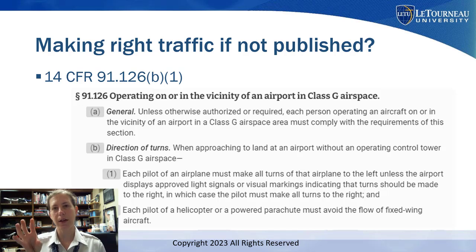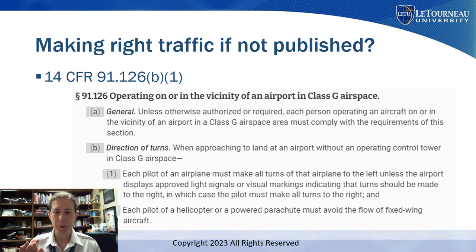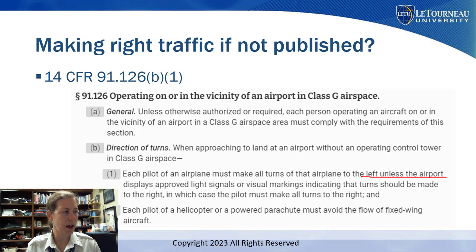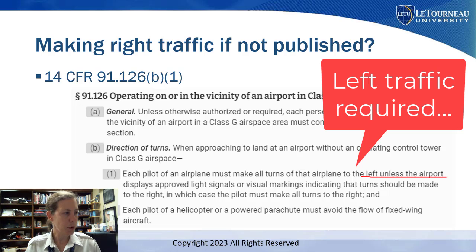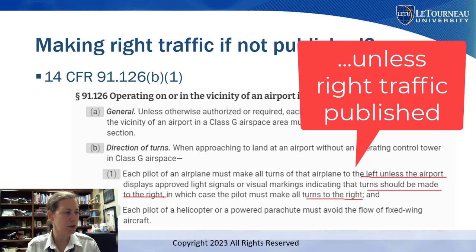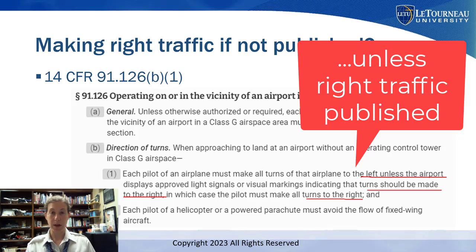14 CFR 91.126(b)(1) says very clearly: if we are operating at a Class G airspace — so an uncontrolled airport — we are required to make all turns to the left unless the airport has approved markings indicating we can make turns to the right, in which case we make all turns to the right. We typically call that making right traffic.